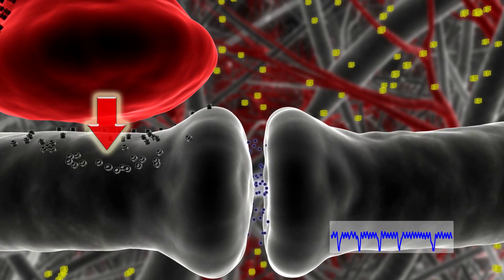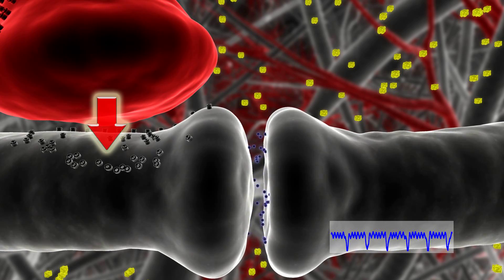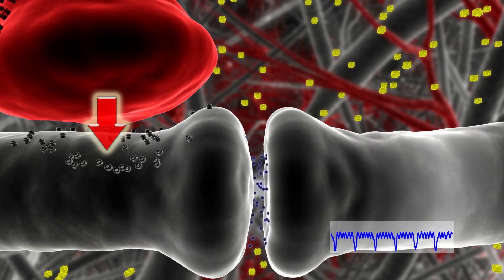These increases in synaptic glutamate release can be detected with the patch clamp technique as an increase in the frequency of spontaneous miniature synaptic currents.